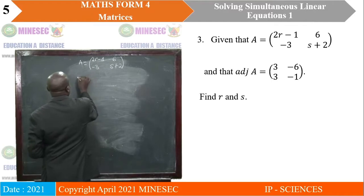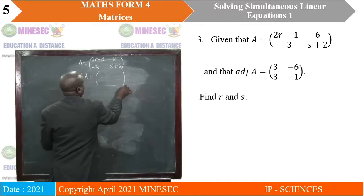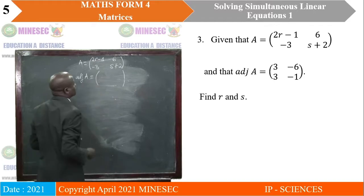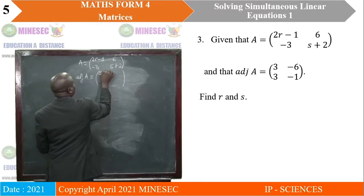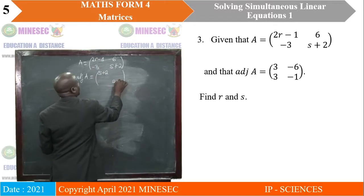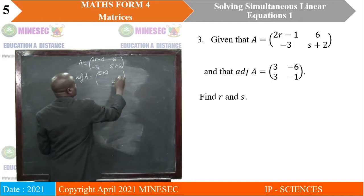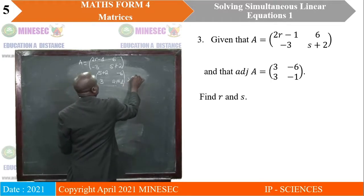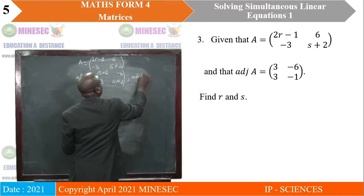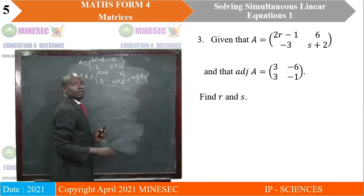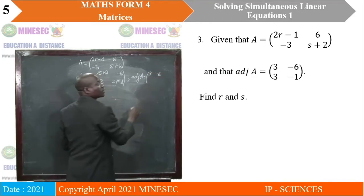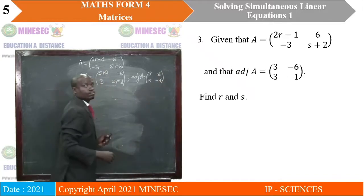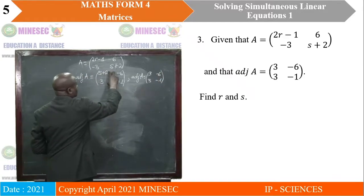If we were looking for the adjoint of A, adjoint A is obtained by swapping the elements in the main diagonal: S+2 comes here and 2R-1 is here. These entries we change their signs: we have -6 and then 3. But in the question, adjoint A is given as [3, -6; 3, -1]. That's the adjoint that is given, which means this calculated adjoint is the same as the given one.